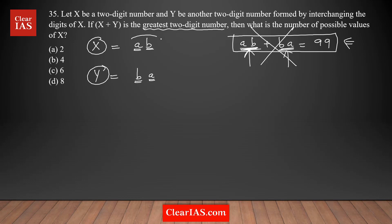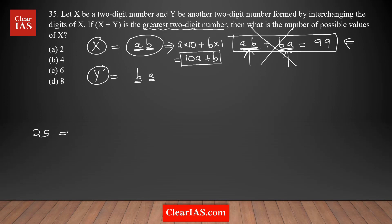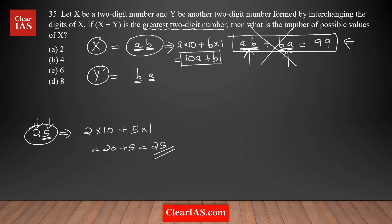In situations where you need to use a two-digit number in an equation, it is always a good idea to use place values. 'ab' can be written using place values: b is the units digit and a is the tens digit, so the value is a times 10 plus b times 1, which equals 10a + b. For example, 25: the digit 2 has place value 10, so 2×10 plus 5 gives 20+5=25. Same concept applies here — x equals 10a + b.